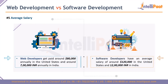The fifth point is average salary. Both web developers and software developers are paid really well. Web developers have a starting salary slightly lower than software developers due to the complexity involved — around $80,000 annually in the United States, and around 7 lakhs per annum in India. Software developers average around $115,000 to $120,000 in the USA and around 10 to 12 lakhs per annum in India.